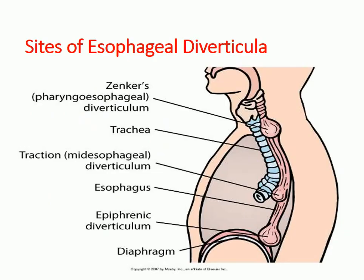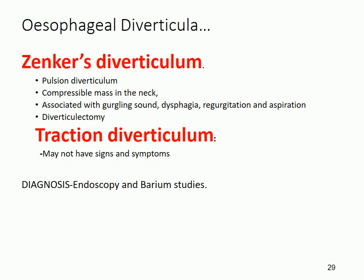Looking at this diagram, we have the Zenker's diverticulum occurring at the pharyngo-esophageal junction. The traction diverticulum occurs in the mid-esophagus, and the epiphrenic diverticulum — 'epiphrenic' meaning above the diaphragm — occurs just above the lower esophageal sphincter.